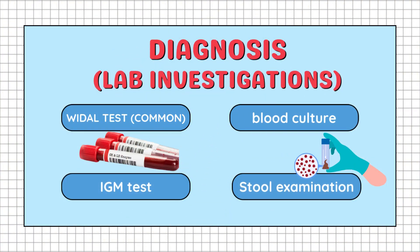Lab investigations to identify typhoid include the Widal test, which is the most common test but its findings are not very accurate, blood culture test, IgM test, and stool examination.